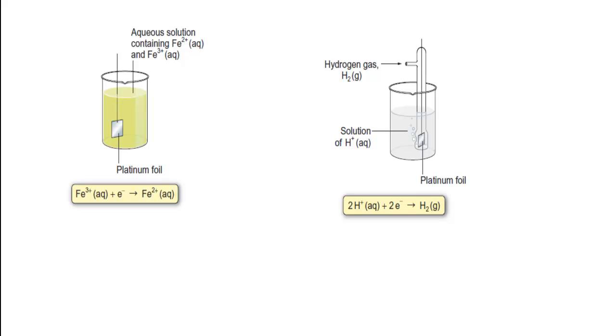We can actually have an electrode with any combination of a more oxidized and more reduced form in solution. So if you look at the left hand electrode in this picture, we've got Fe3+ and Fe2+.